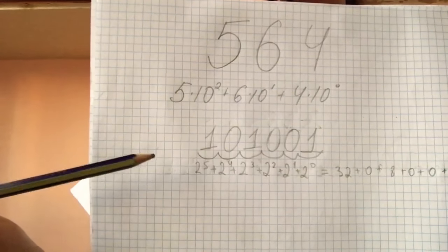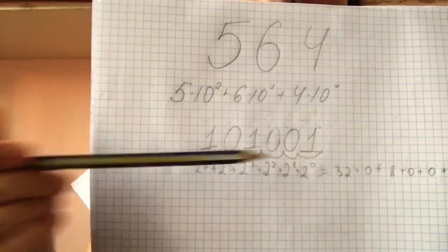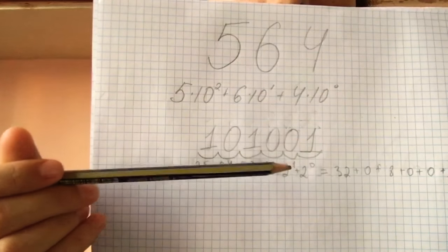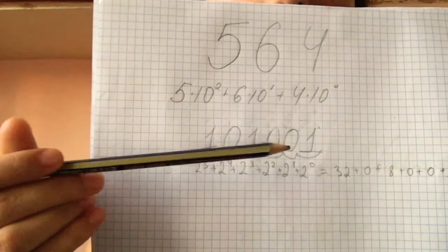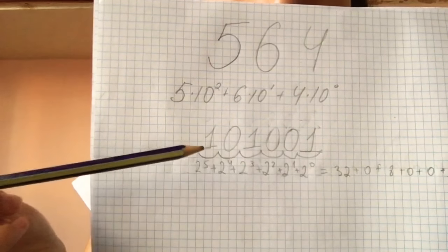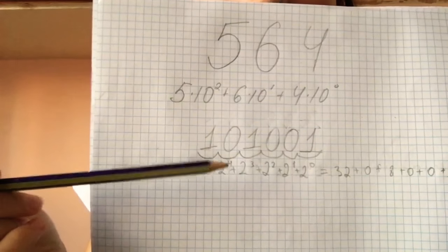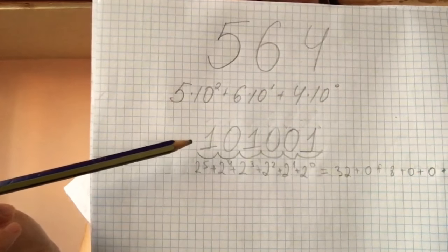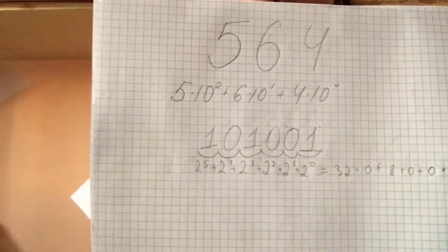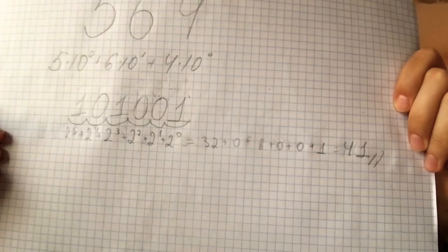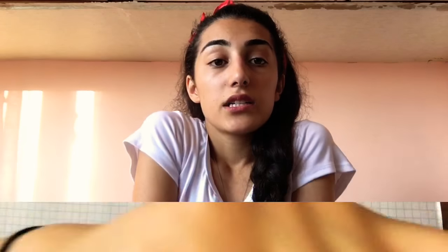The same works for the binary system, with one difference: instead of using ten to the n power, we use two to the n power. So for representing a binary number, we go: one times two to the zero power, plus one times two to the fourth power, plus one times two to the fifth power. By adding all of that together, we get the number 41.